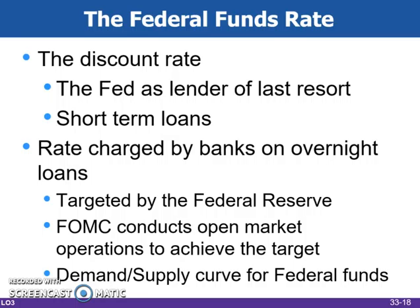As the lender of last resort, the Fed makes short-term loans to banks to cover unexpected and immediate needs for additional funds. The rate that the Fed charges the banks is called the discount rate. In providing the loan, the Fed increases the reserves of the borrowing bank. Since there are no required reserves against loans from the Fed, all new reserves are considered excess reserves, and as such, they enhance the ability of the bank to lend.